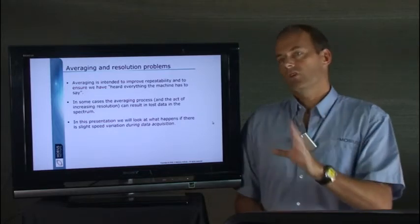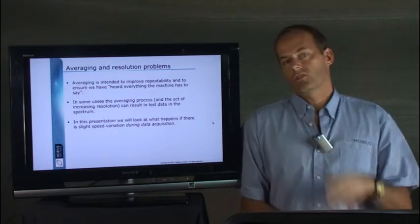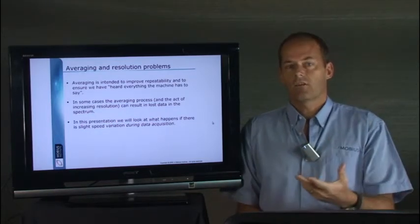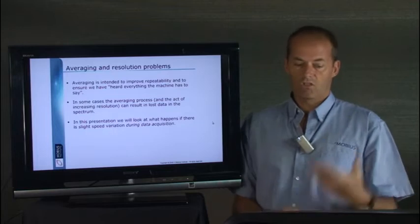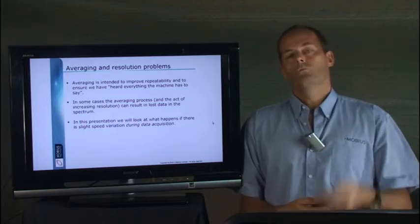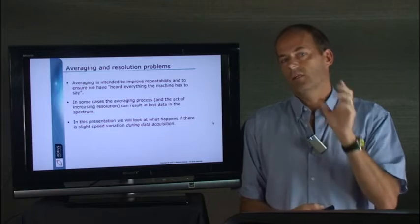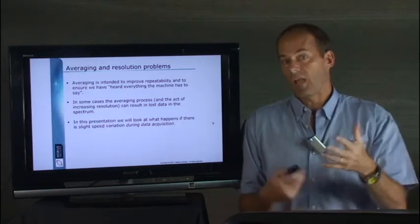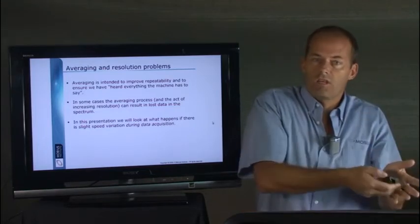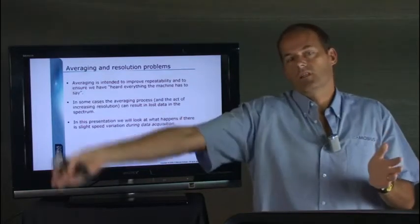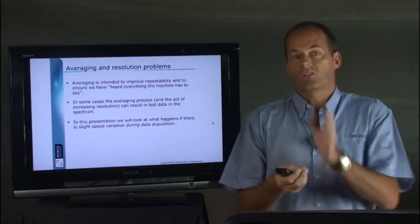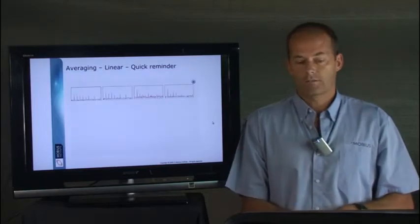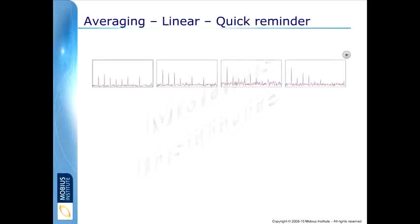But what you may not realize is that in certain situations, the result you get after the averaging process isn't necessarily the best representation of the data. So what we're going to look at now is what happens if there is a slight speed variation during the measurement acquisition time. So not the speed variation between today's measurement and the next time you take a measurement, actually during the time that the data collector or analyzer is acquiring the data.